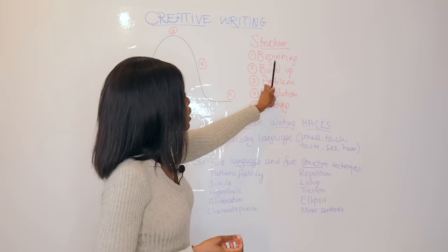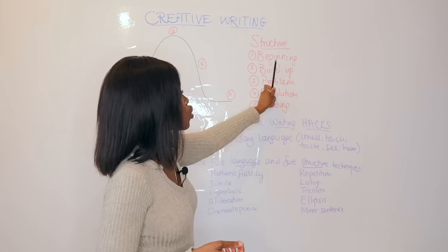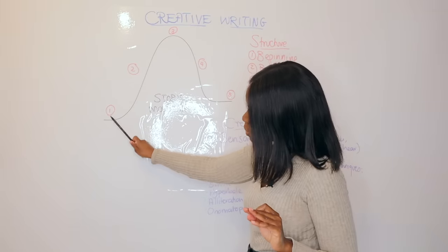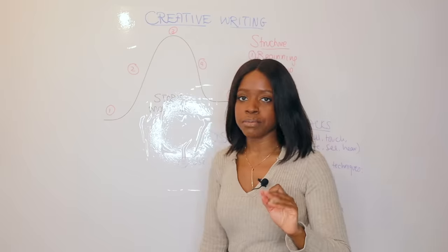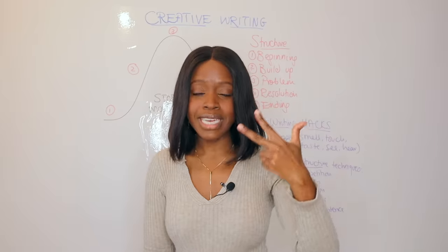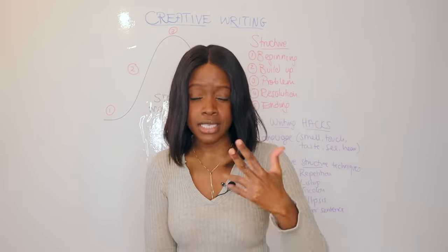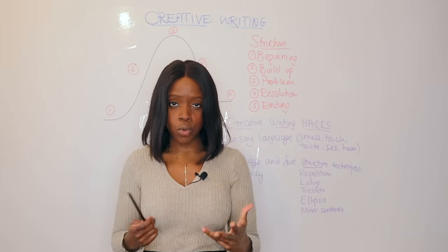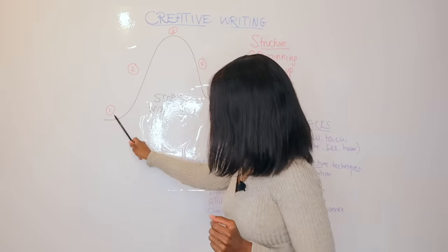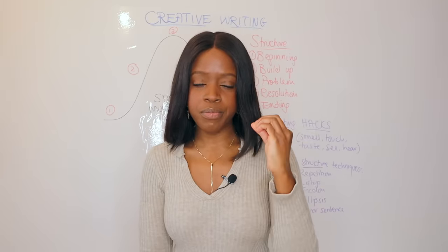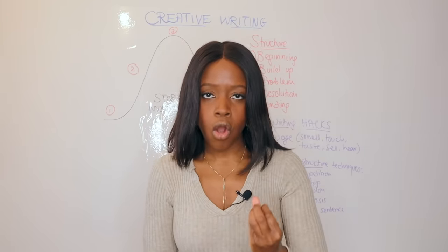Always start off your creative writing story with a beginning paragraph. It sounds really obvious, but what really goes into your beginning paragraph? As you can see, your beginning paragraph starts here at the bottom of the mountain. This is where you establish your setting, your weather, and also your character — your protagonist. This is your main character who's going to go on this adventure and maybe encounter an obstacle. I would suggest starting with a really good use of pathetic fallacy to establish the sense of mood.